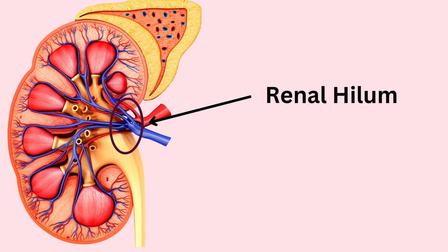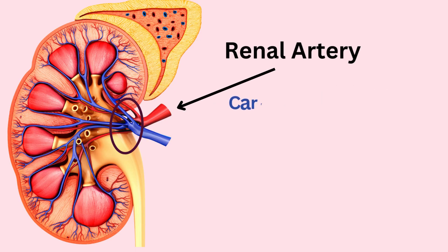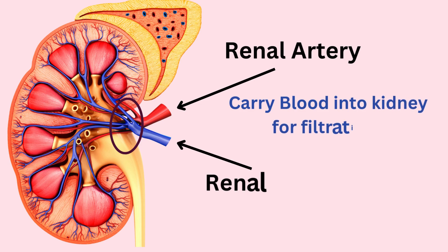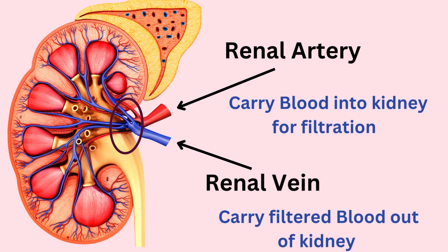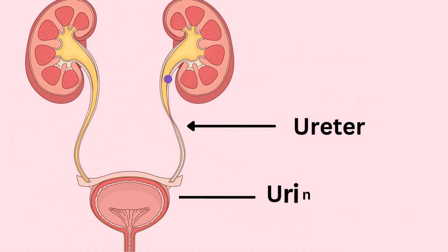Here, important structures enter or leave the kidney. The renal artery brings blood into the kidney for filtration. The renal vein carries filtered blood out of the kidney. The ureter carries urine away from the kidney to the bladder.